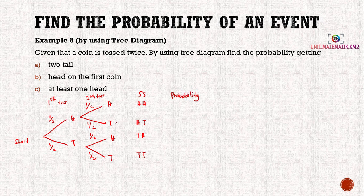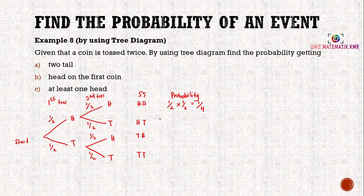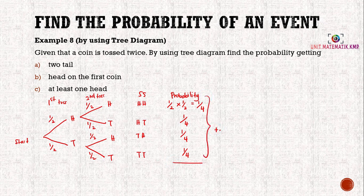To find the probability of each outcome, we multiply along the branches. For HH: one over two times one over two equals one over four. For HT: one over two times one over two equals one over four. The third branch TH and the last branch TT each also give one over four. To verify, adding all probabilities gives one, which confirms our tree diagram is correct.